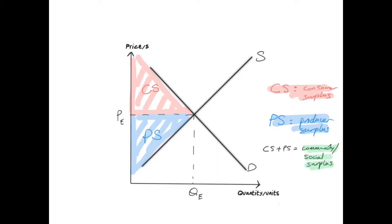Producer surplus is the opposite. All producers receive the equilibrium price in exchange for their product, but some producers may have been willing and able to provide that product for a lower price. That difference between what they're willing and able to provide the product for and the price they actually receive is their producer surplus. Adding consumer surplus and producer surplus — CS plus PS — gives us the total community or social surplus.